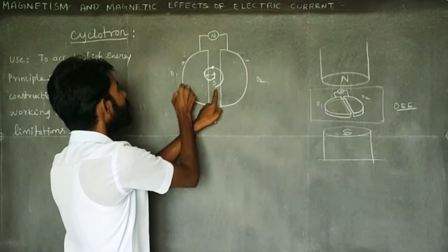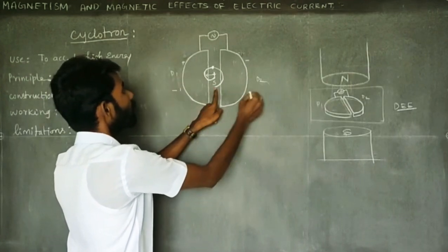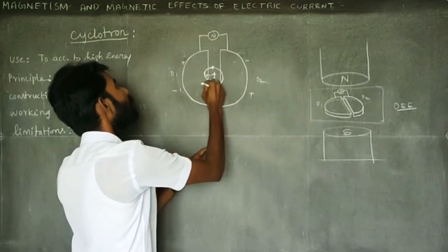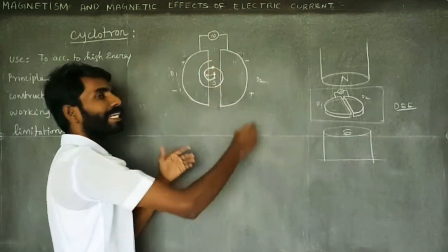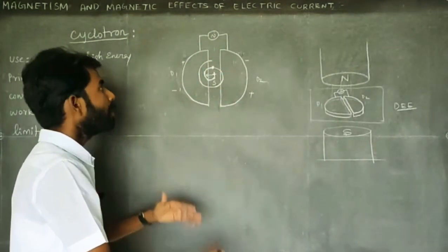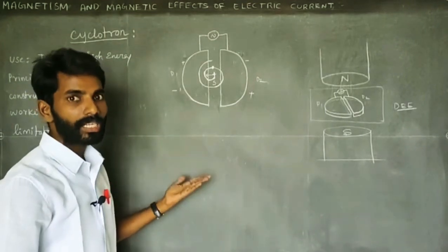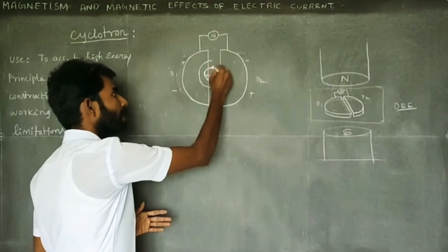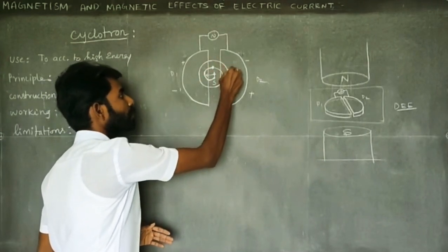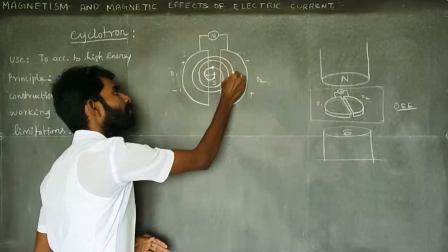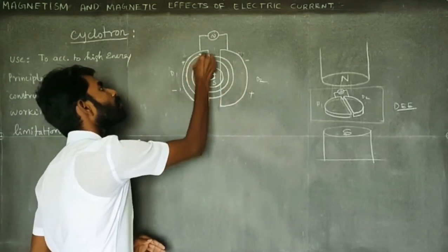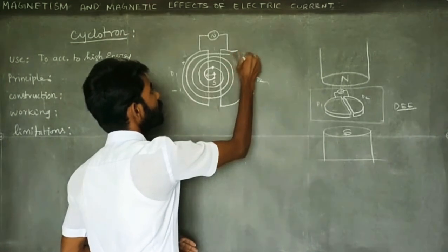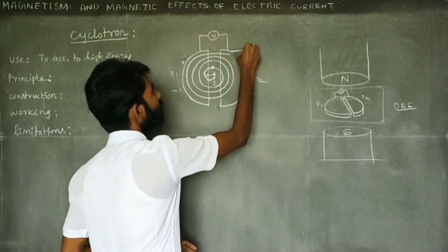Over time, the particle is continuously accelerated — positive attracts negative and positive. Over time the particle accelerates continuously. The velocity is continuously increased. The radius is increased. The velocity is increased. Now if we accelerate enough energy, we use a deflector plate.